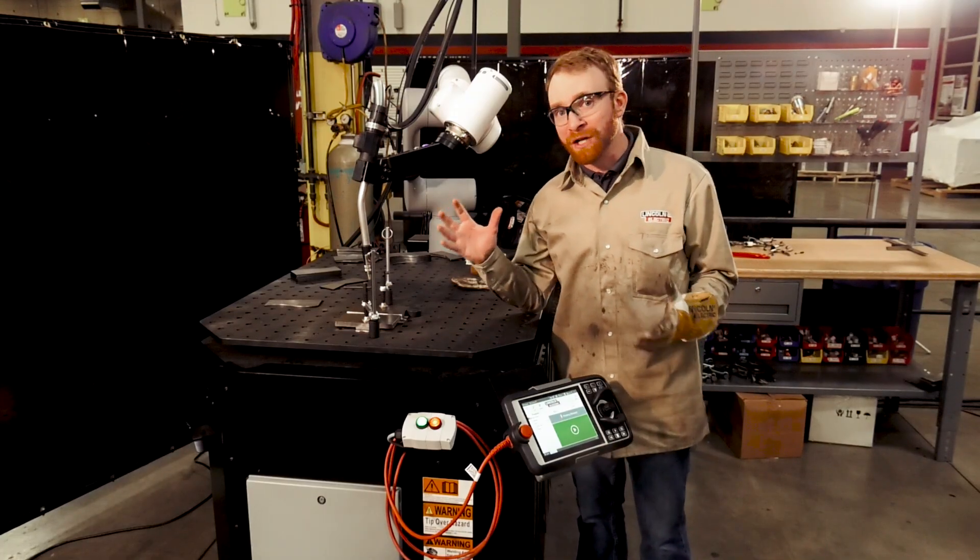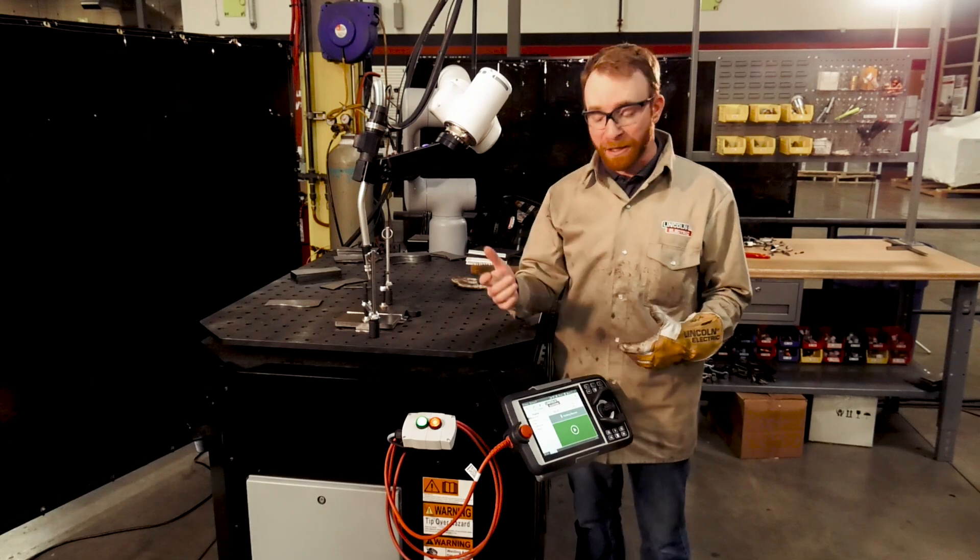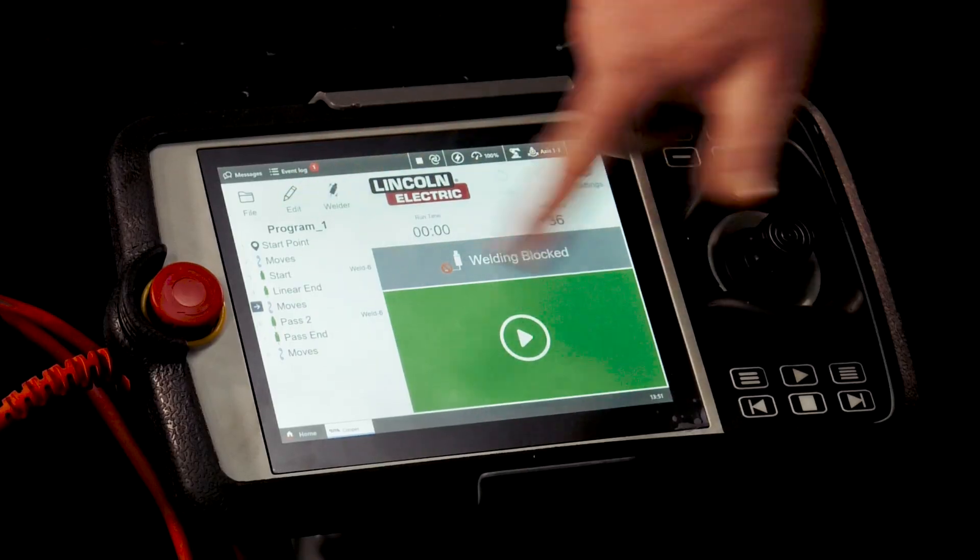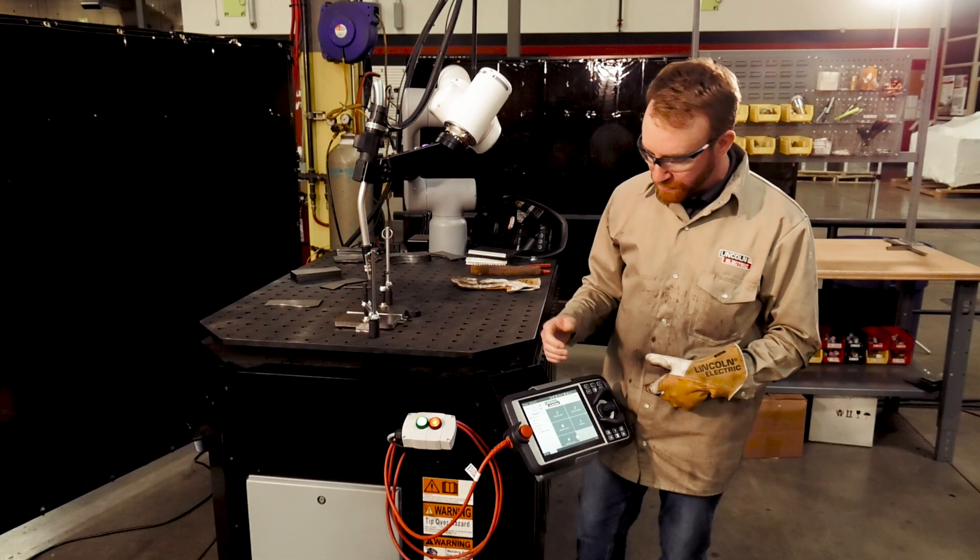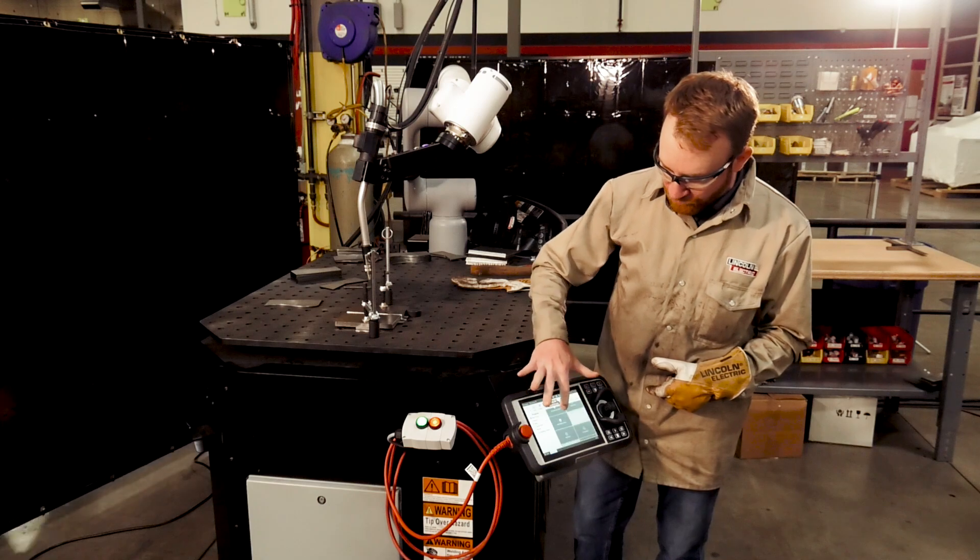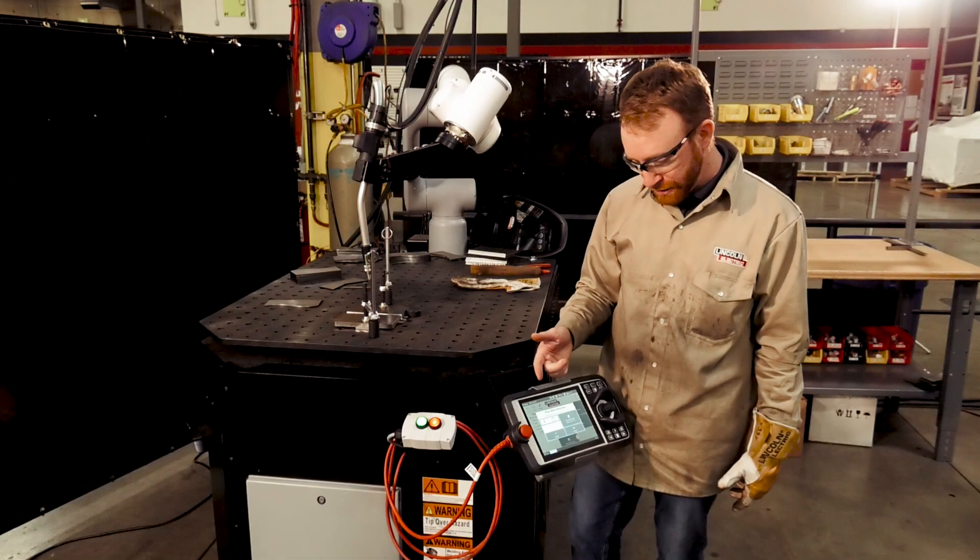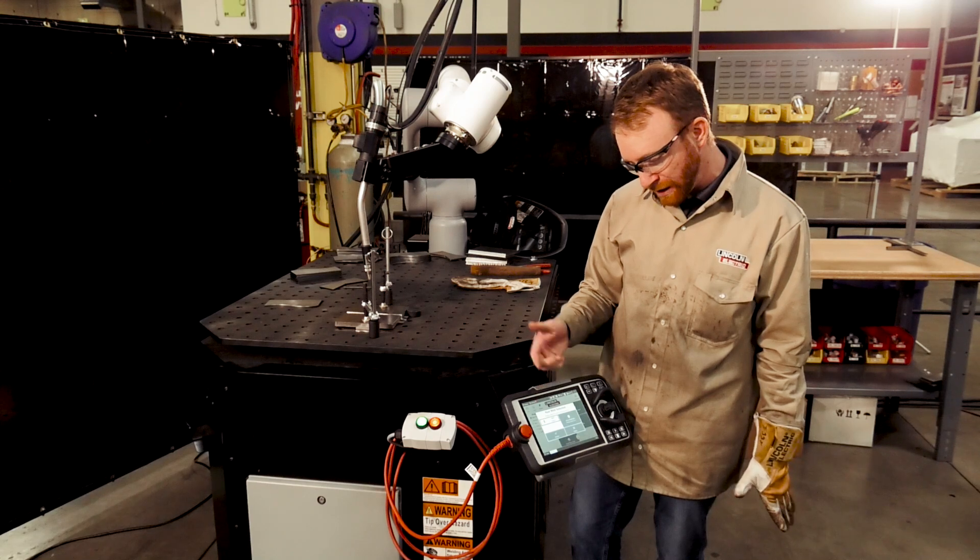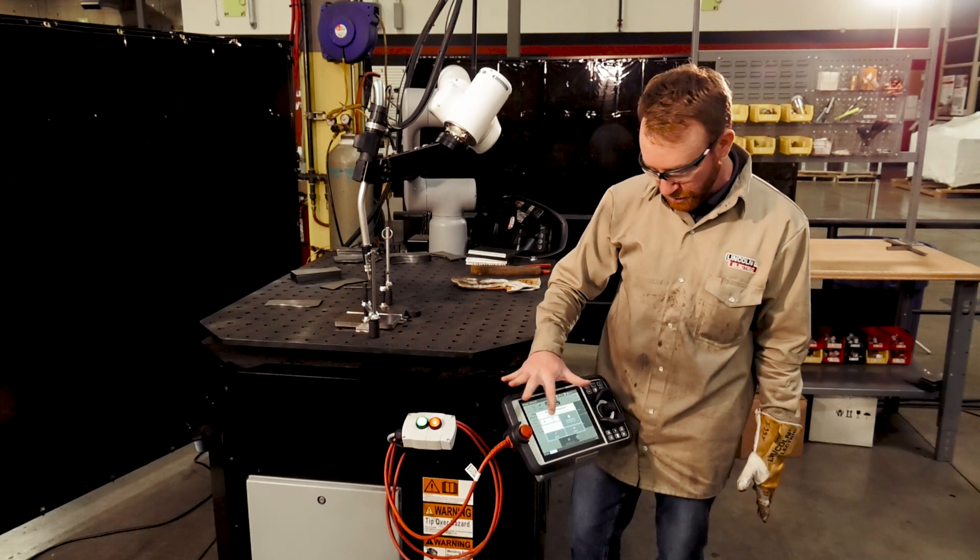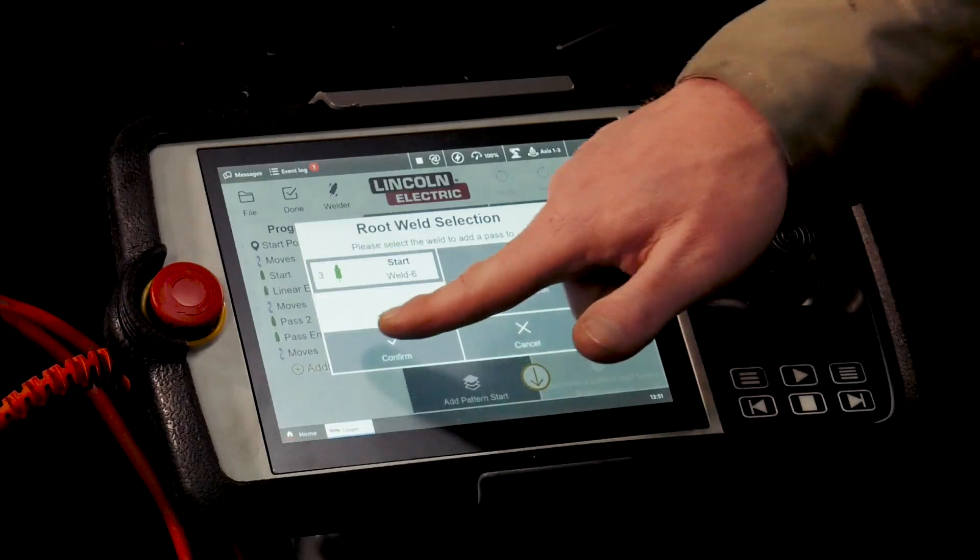Now that first pass is done, we're going to set up our second pass. In order to do that, we're going to come right in here to the screen. Go to edit. We're going to go right after our moves, go to add pass right here. It's going to ask you to select the weld we wanted to add. We want to say start six. So we're going to press confirm.